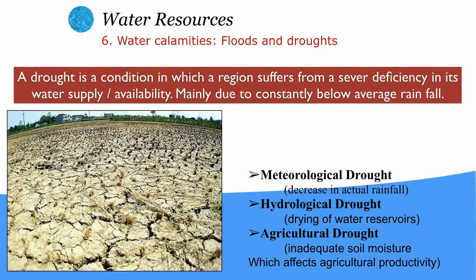A drought is a condition in which a region suffers from severe deficiency in its water supply, mainly due to consistently below-average rainfall. Droughts are of three types: meteorological drought, hydrological drought, and agricultural drought. Meteorological drought means rainfall is below average in an area. Hydrological drought occurs when water reservoirs in an area are getting dried up. Agricultural drought happens because of inadequate soil moisture, making the land unusable for agriculture.